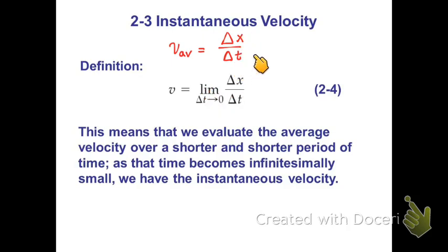divided by Delta T is average velocity and it requires two different points, both in position and time. But for instantaneous velocity, what we do mathematically is just take the limiting value of this ratio when this interval Delta T goes to zero.